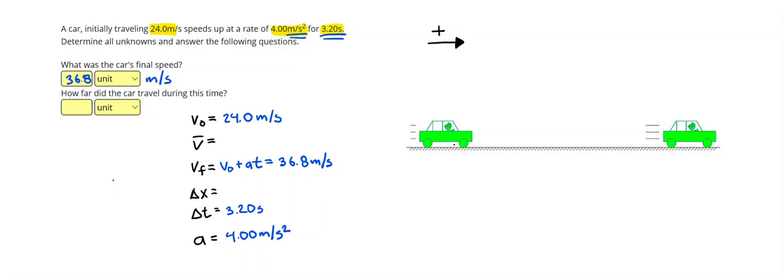It says, how far did the car travel during this time? Okay, so to find the displacement, in this problem, I'm going to use initial velocity times time plus one-half the acceleration times the time squared. So, I'm plugging in 24 times 3.2 plus one-half times 4 times 3.2 squared.